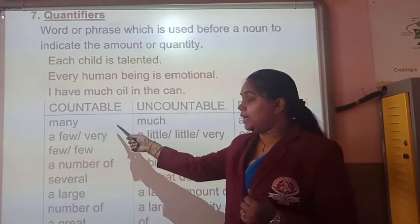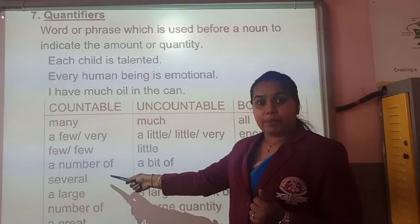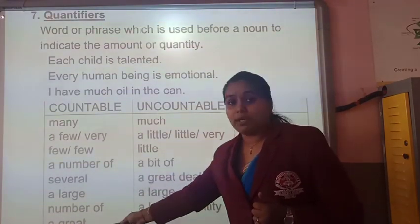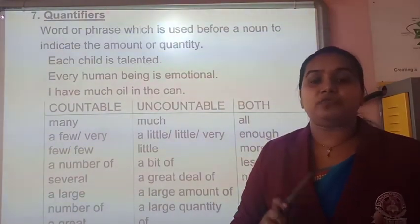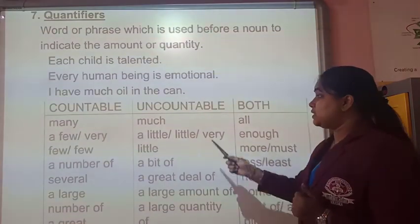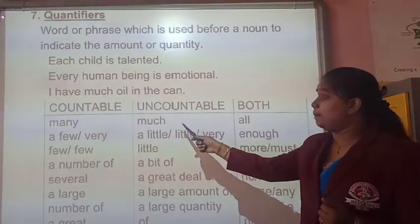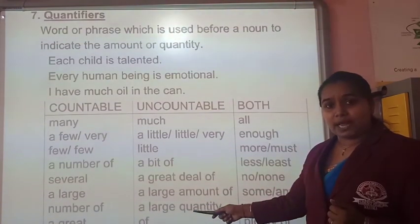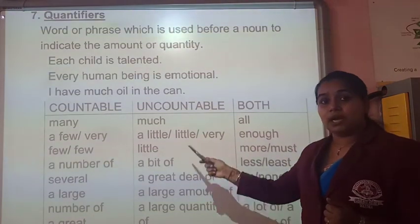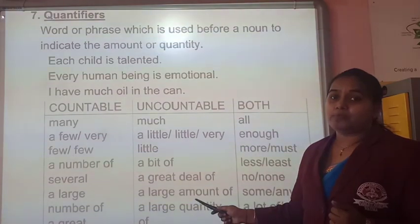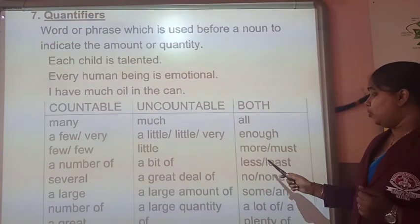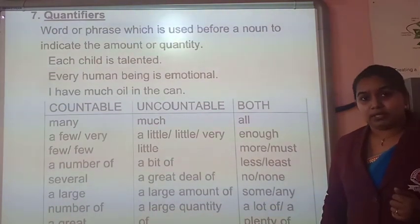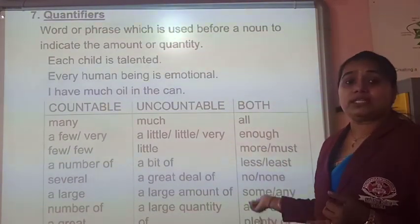Quantifiers for countable nouns include: many students, few students, a number of people, several children, a large number of students. For uncountable nouns: much — 'There is much rice left on the plate'; a little, a bit of, a great deal of, large amount of water, large quantity of. Quantifiers for both countable and uncountable nouns include: all, enough, more, less, some, any, a lot of, or plenty of — 'Plenty of rice is left', 'Plenty of sweets.'